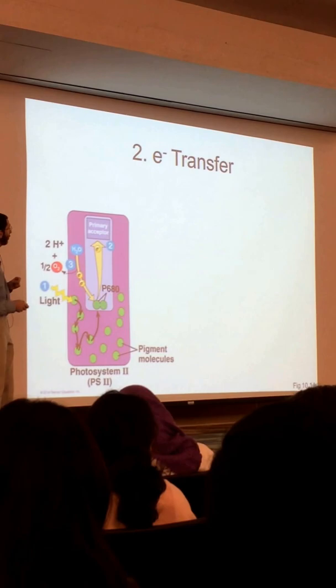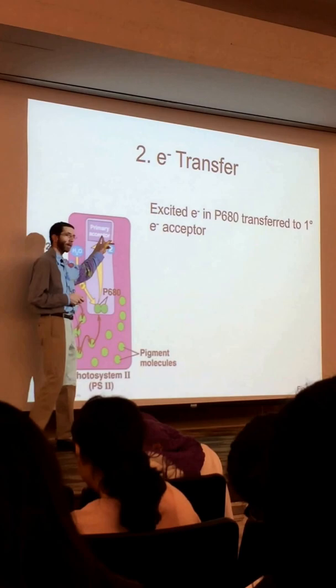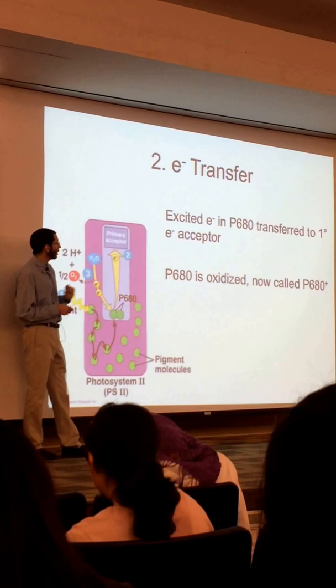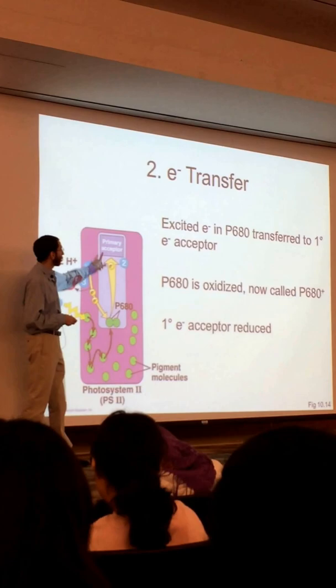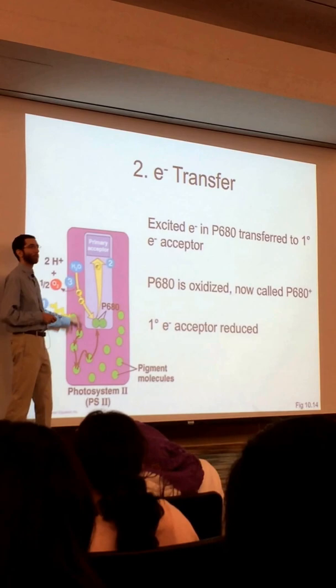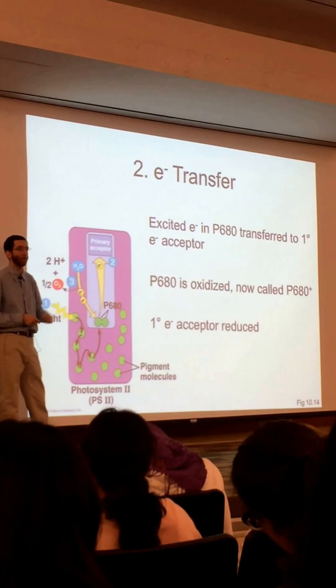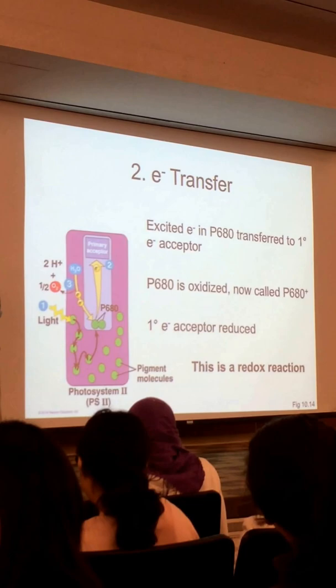Now we have our first redox reaction — step two. The excited electron in P680 is transferred up to the primary electron receptor in the reaction center. P680 is oxidized in this process; it loses an electron, so we now call it P680+, because it has a positive charge. The primary electron receptor is therefore reduced. So we have a redox reaction: the primary receptor is reduced and P680 is oxidized. That's the first redox reaction.